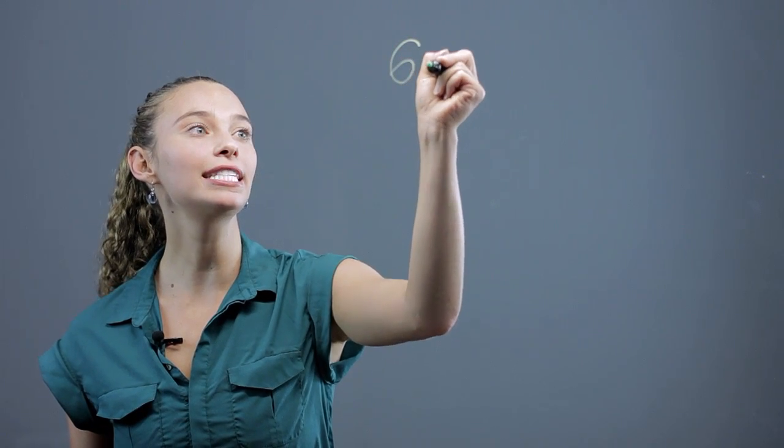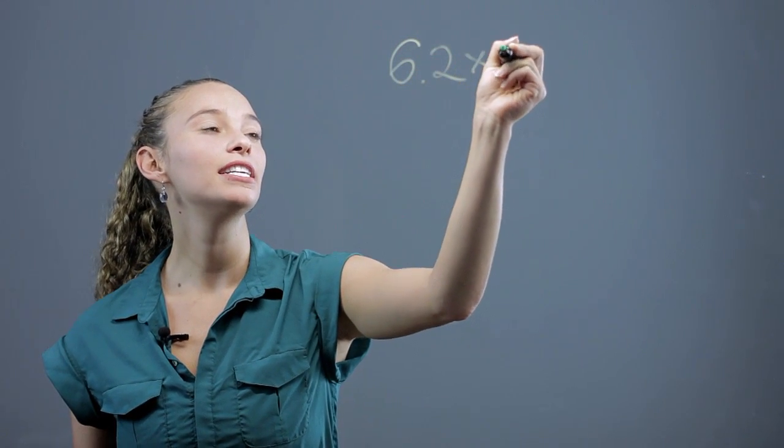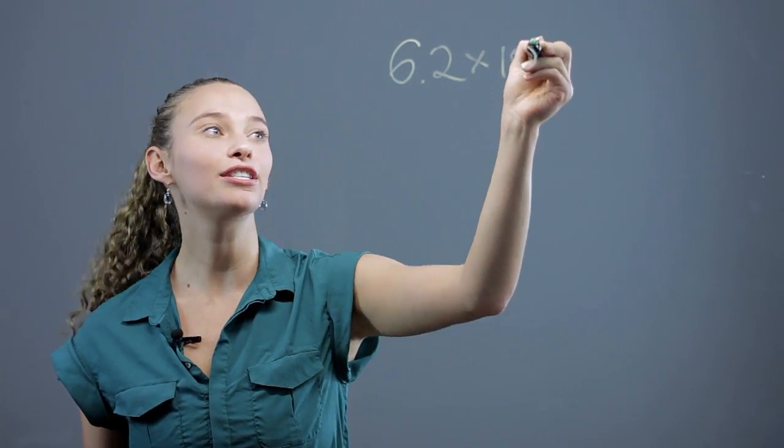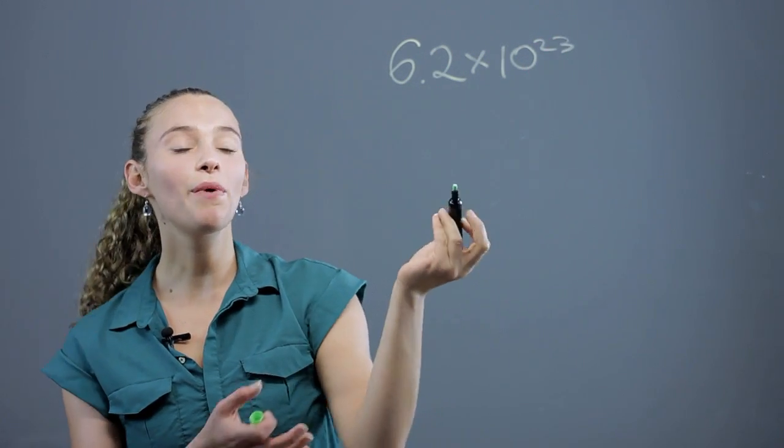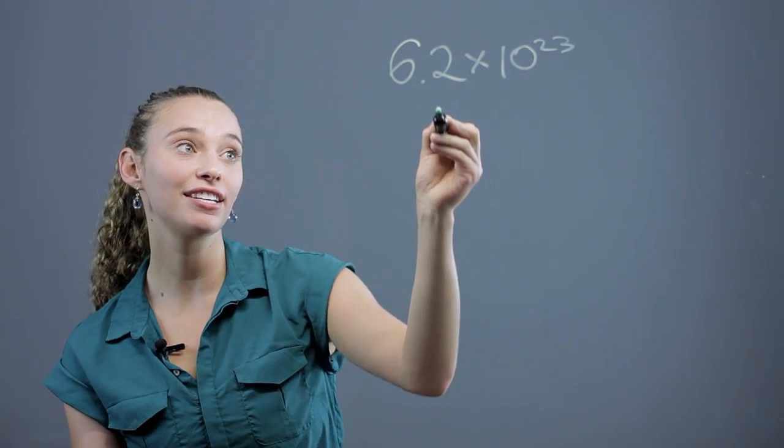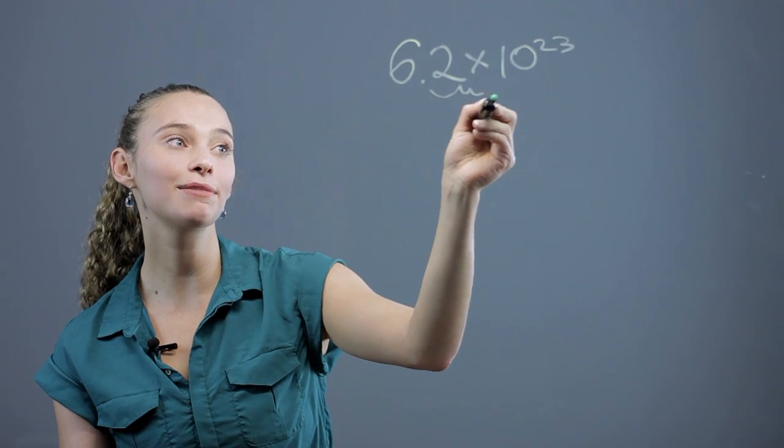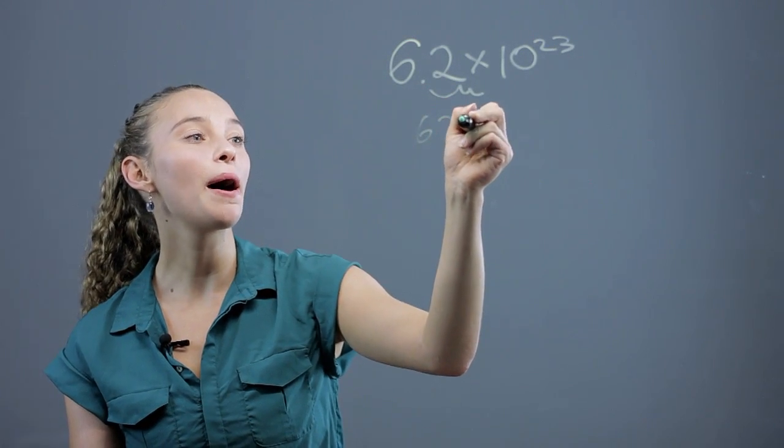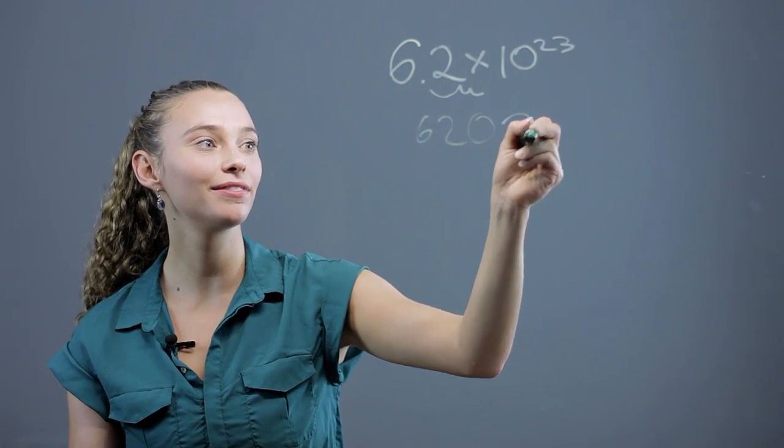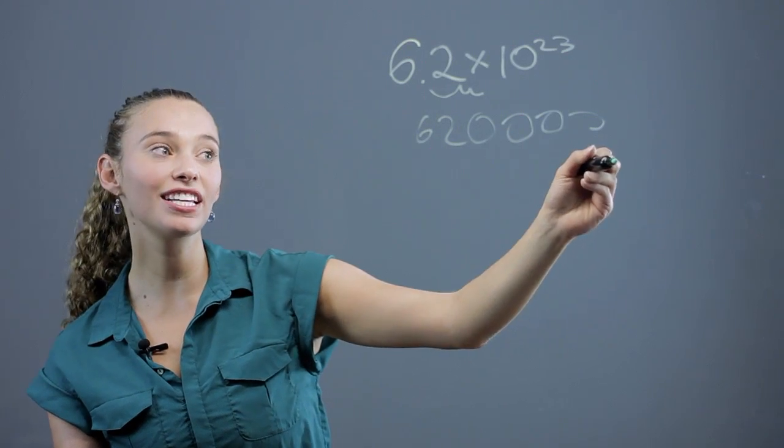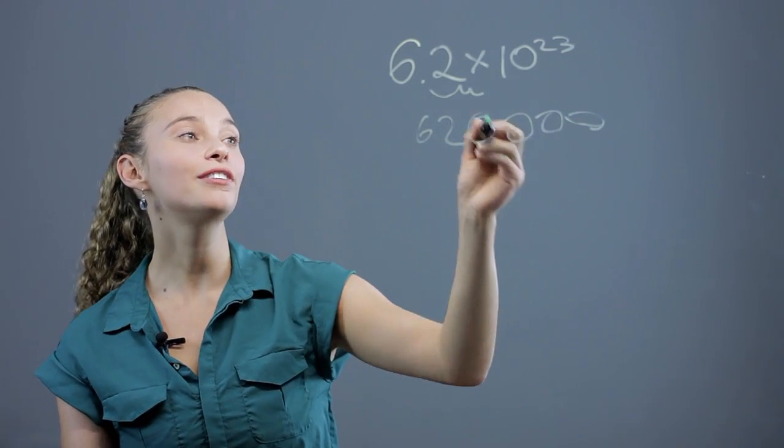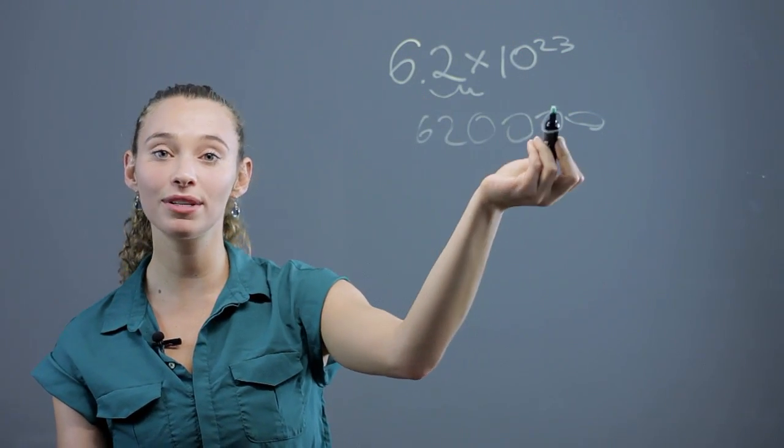So something like 6.2 times 10 to the 23rd. Now if we wanted to write that out not in standard form, we would have to bring over the decimal point and we would have 22 zeros, right? So it would go on a really long way, that's a hard thing to write. So instead we write it like this so it's simpler.